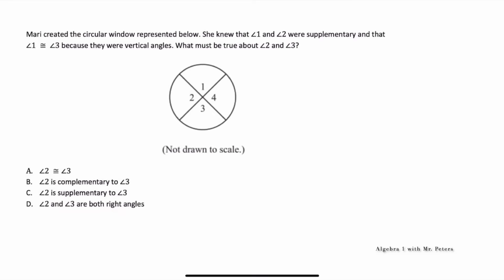In this next example, there are two important pieces of information. The first one is that angle 1 and 2 are supplementary — so we know once we add angle 1 and angle 2, this is going to give us 180 degrees. Then we know that angle 1 and 3 are the same — they're congruent because they are vertical angles. So angle 1 is congruent to angle 3; they're the same exact thing. Now when they ask us what must be true about angle 2 and 3, answer choice A is incorrect — we don't know if angle 2 and 3 are the same. We could say that about angles 2 and 4, but not 2 and 3. So A is gone.